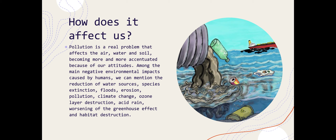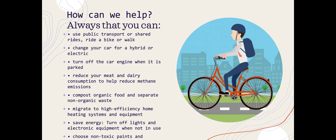We can mention the reduction of water sources, species extinction, floods, erosion, pollution, climate change, ozone layer destruction, acid rain, worsening of the greenhouse effect, and habitat destruction.